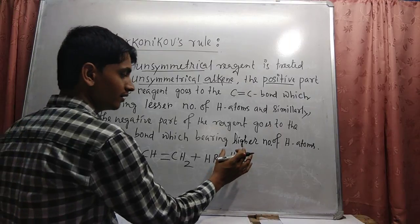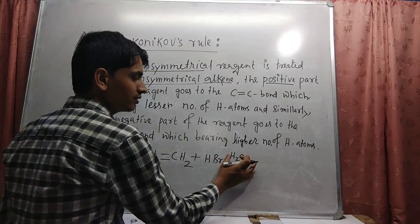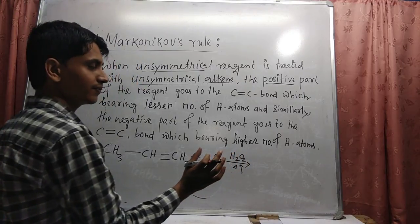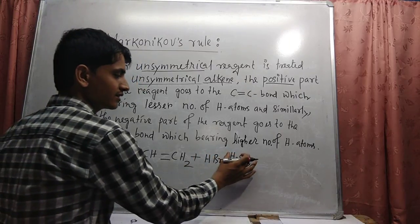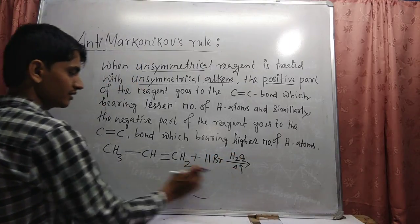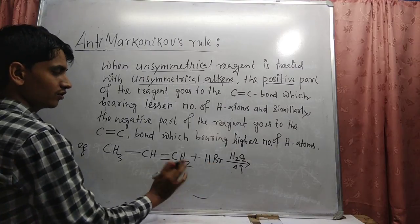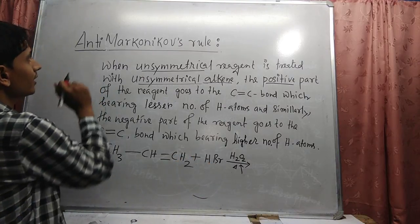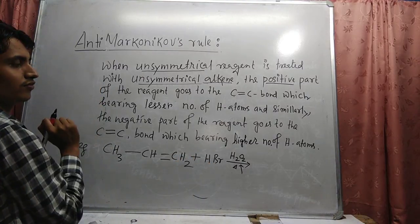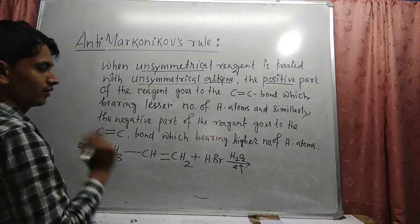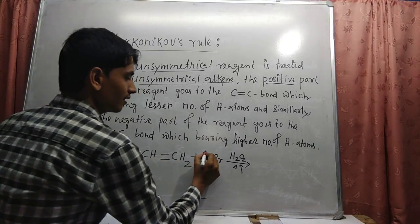But if hydrogen peroxide is present, then this type of addition is called anti-Markovnikov's addition.